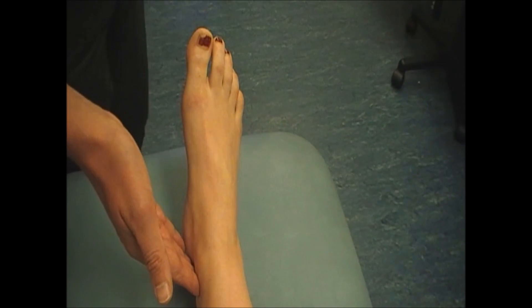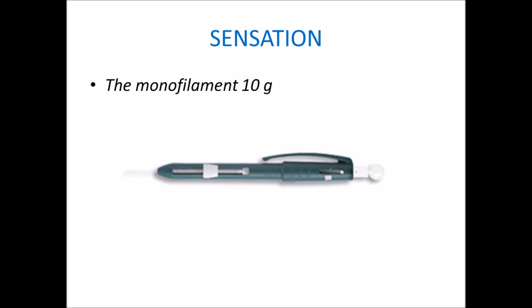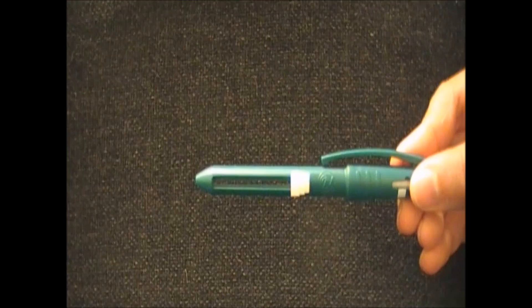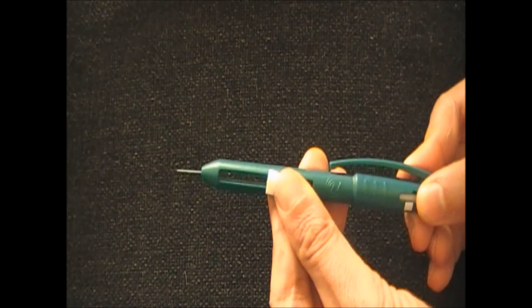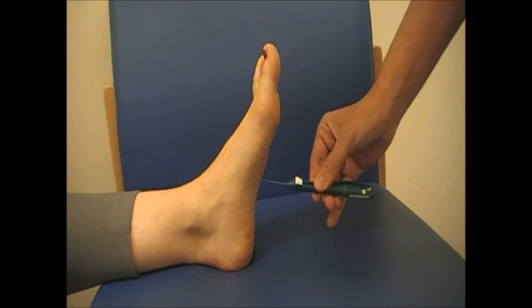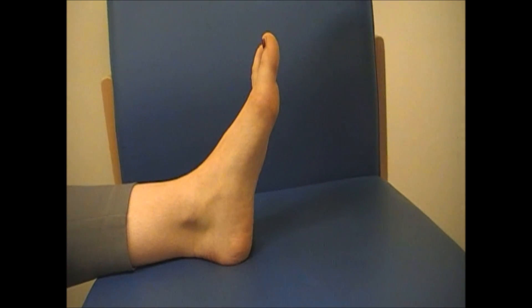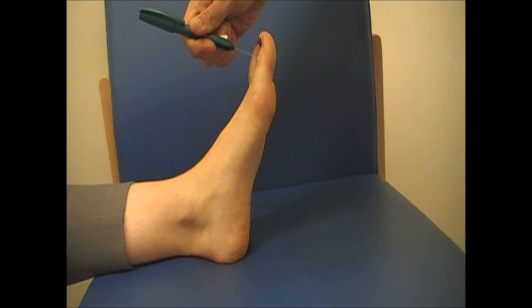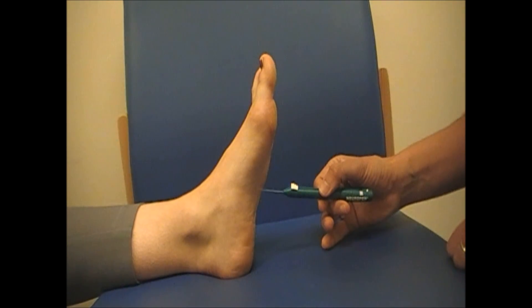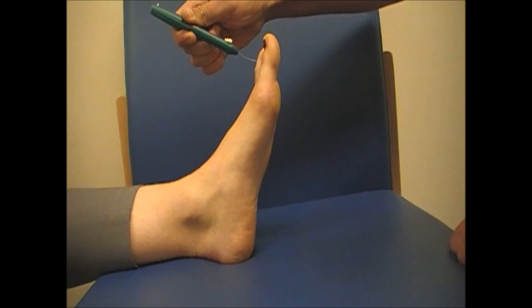The absence of the foot pulses indicates peripheral vascular disease. The most practical and reliable tool for the assessment of sensation is the monofilament 10G. This is a thin plastic hair that should be applied onto the patient's skin at a right angle until it buckles. Use the monofilament on the arch and on the plantar and dorsal aspect of the great toe. The patient should be able to feel the monofilament touching the skin. Failure to do so indicates reduced sensation, a common finding in diabetic neuropathy.